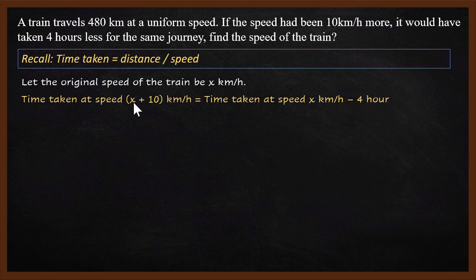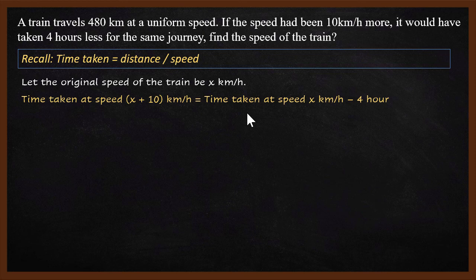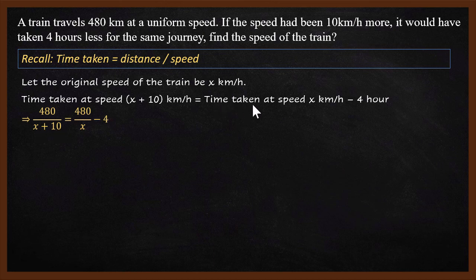Another way of looking at it: if you go at x plus 10, you will take 4 hours less. Now let us translate this equation into algebraic form. Distance is 480 km, speed is x plus 10, so the left-hand side is 480 divided by (x plus 10). The right-hand side is 480 divided by x, minus 4. So this is our algebraic equation.